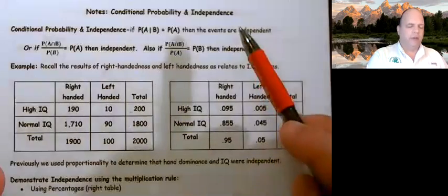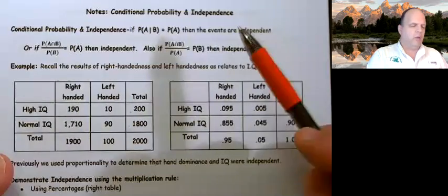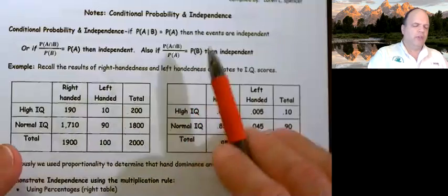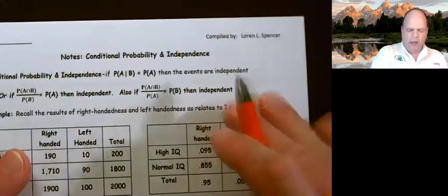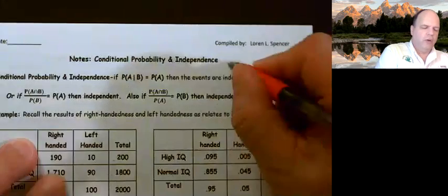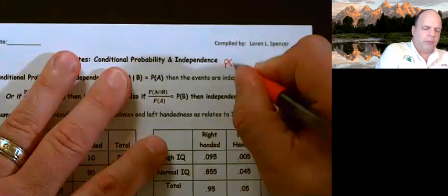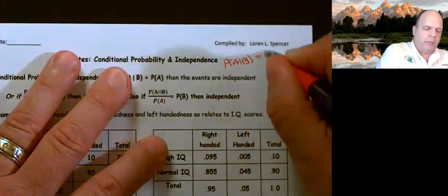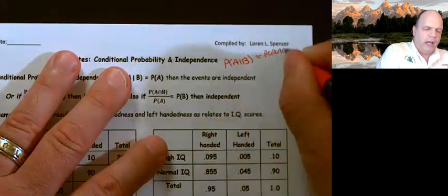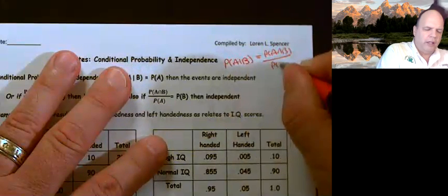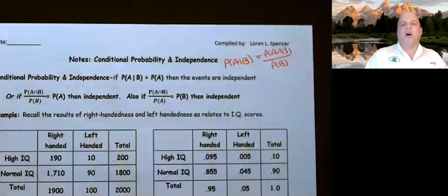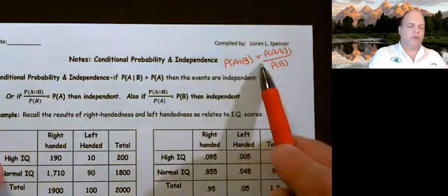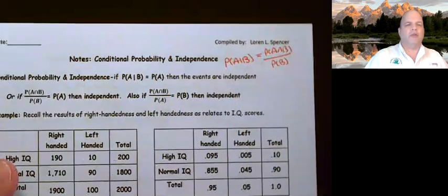This is page 83 of the note spiral and we're working on conditional probability and independence. I want to go back and talk about something from page 82: the probability of A given B equals the probability of A and B over the probability of B. That is always true — there are no conditions. This is always true.